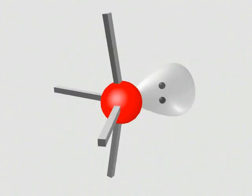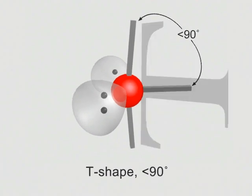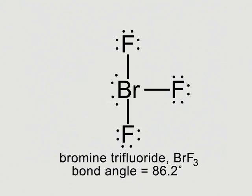With two lone pairs, the object is T-shaped, and the two remaining angles are less than the ideal 90 degrees. Bromine trifluoride is a T-shaped molecule.